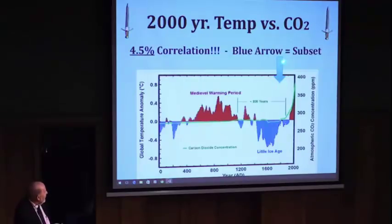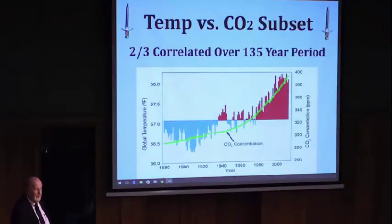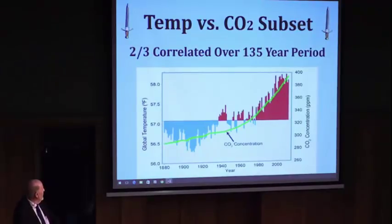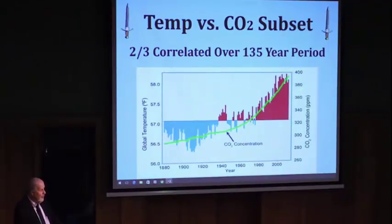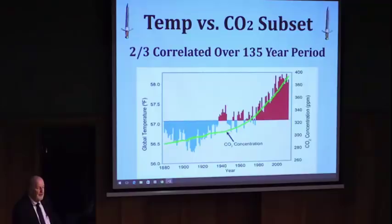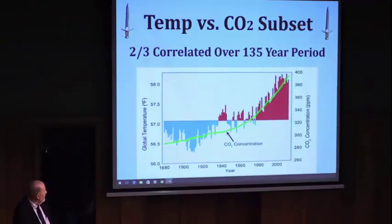Now this little subset traces the recent period from 1880 to the present. Yes, CO2 is rising. And you notice for one third of this graphic, temperatures are still falling. So there is some correlation, but you notice at the end, things kind of flatten out. CO2 still goes up.